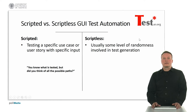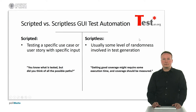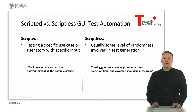In scriptless testing, usually some level of randomness or variation is involved in test generation. In those cases, getting good coverage might require some execution time, and usually the coverage should be measured so that you know what was tested in the end.